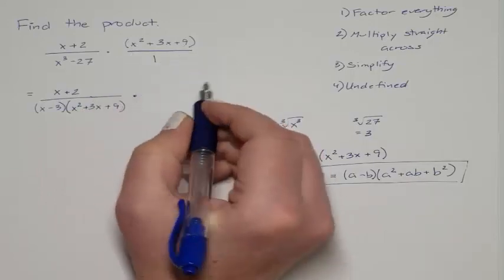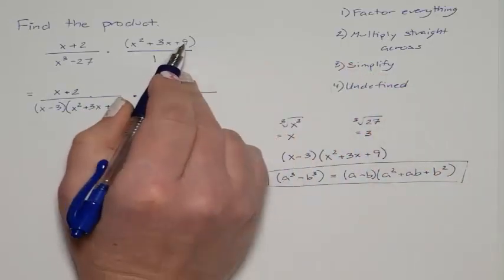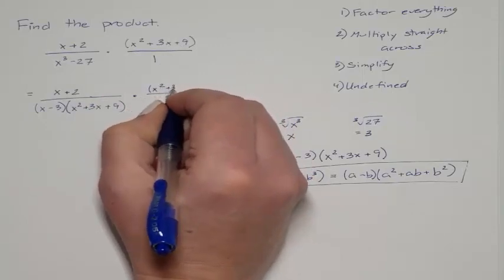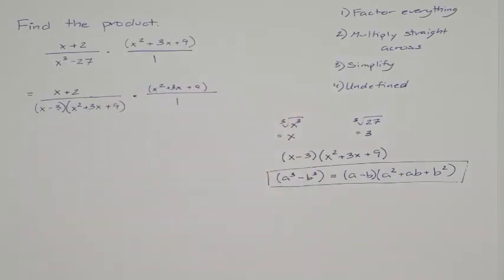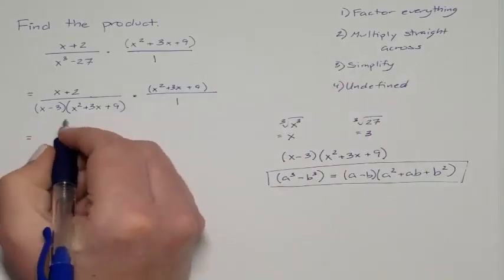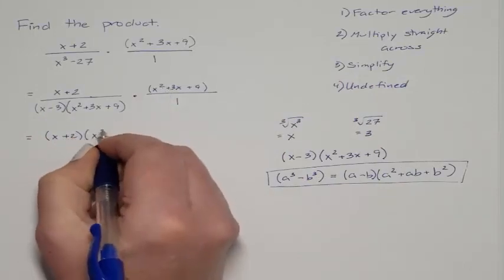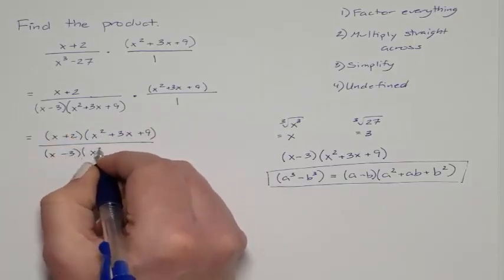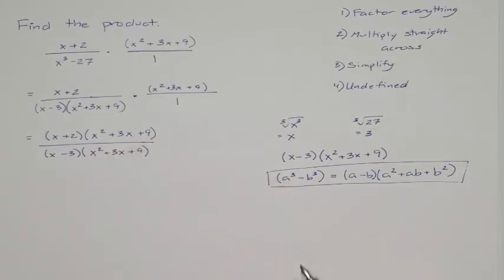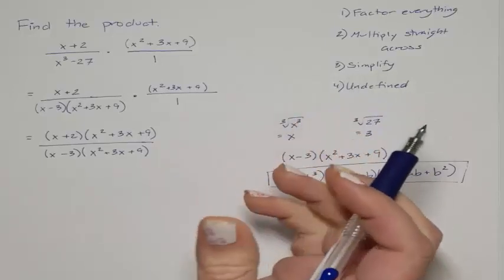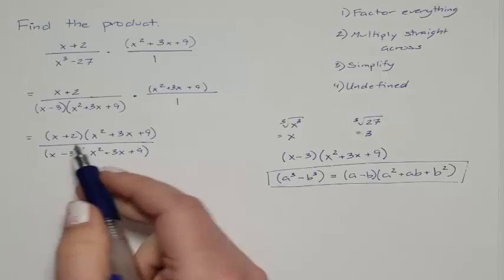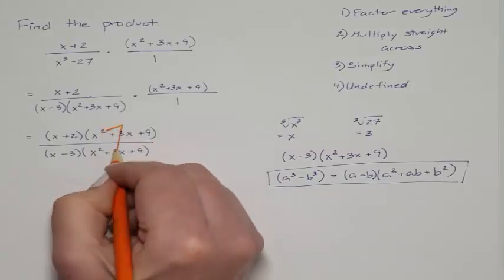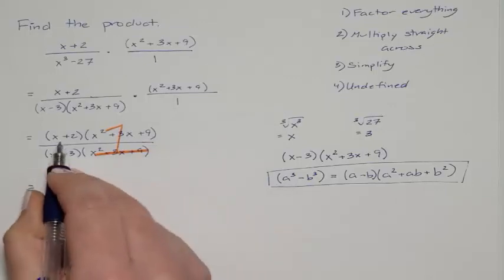Now factoring the numerator of the second fraction — looking for two numbers that multiply to 9 but add to 3. That is not factorable, so we leave it, and the denominator of that fraction is just 1. Multiplying straight across, we get (x + 2)(x² + 3x + 9) in the numerator and (x − 3)(x² + 3x + 9) in the denominator. The entire parenthesis (x² + 3x + 9) appears on both top and bottom, so they cancel out.